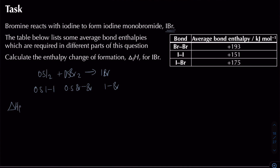Using BRAP: ΔHf = reactants minus products. That gives [0.5 × 151 + 0.5 × 193] − [175]. Calculating this gives an enthalpy change of formation of −3 kJ/mol for iodine monobromide.